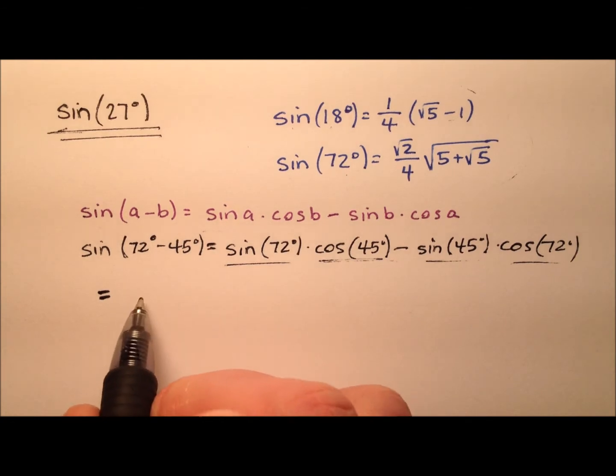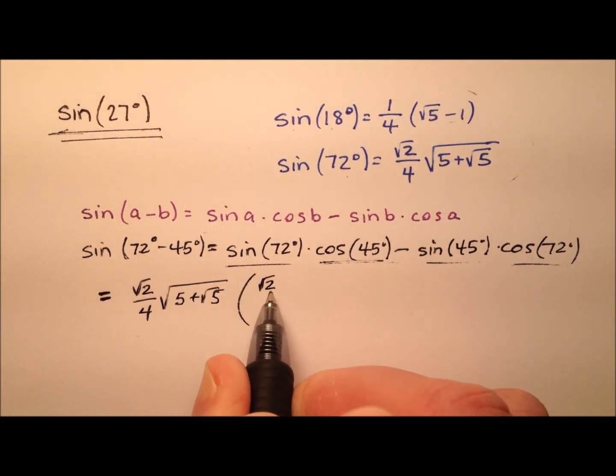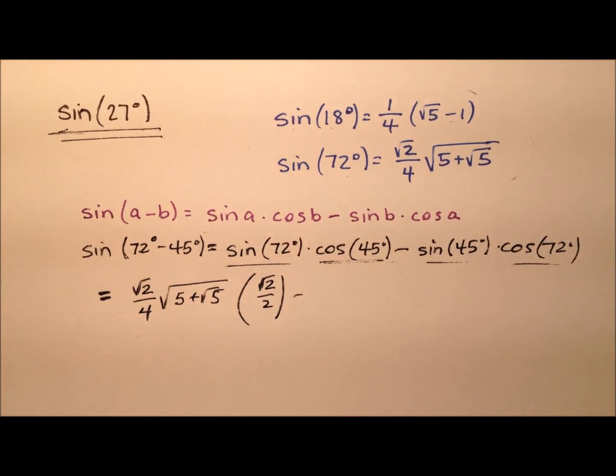Let's go ahead and put the sine of 72 first. We know that's going to be the square root of 2 over 4 times this square root expression here, and the cosine of 45 is the square root of 2 over 2.